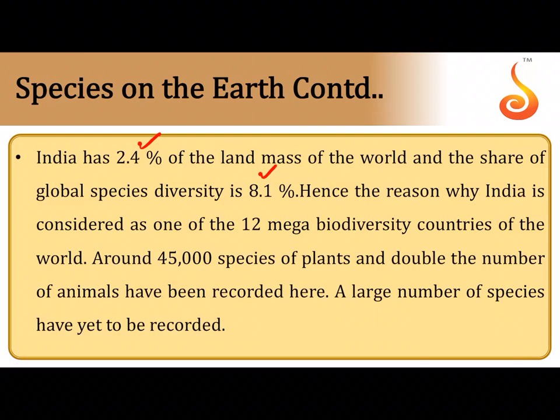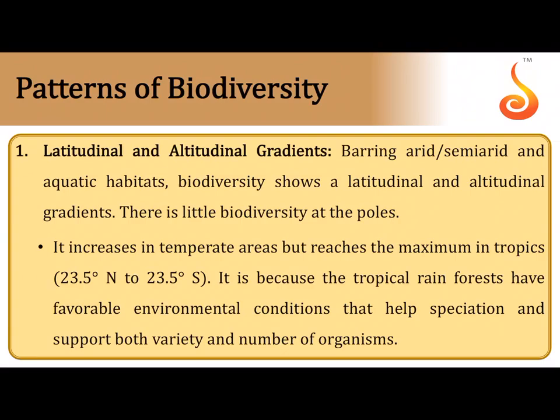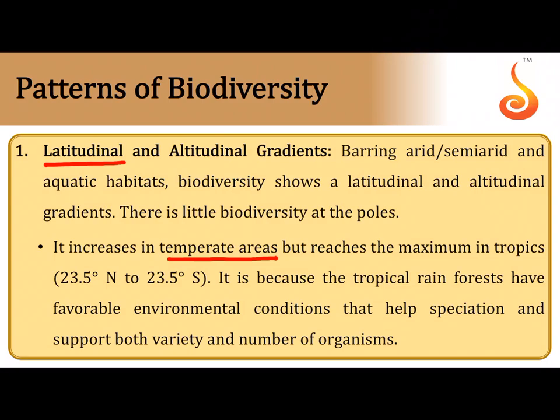India has only 2.4 percent of the land mass but contributes 8.1 percent of total global species diversity. India is one of the 12 mega-diversity hotspots, with around 45,000 species of plants and about 90,000 species of animals recorded. A pattern of biodiversity is the latitudinal gradient — as you move to higher latitudes toward temperate areas, species diversity decreases. Moving from India (closer to the equator) toward temperate regions, the number of species gradually decreases.